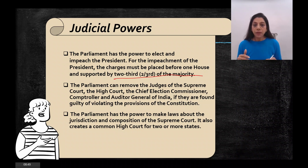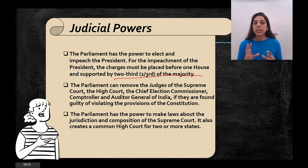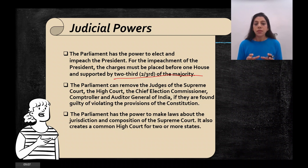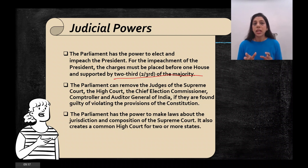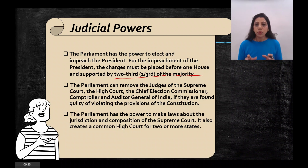Another judicial power of Parliament is to make laws regarding the jurisdiction and composition of the Supreme Court — how many judges there will be, what the jurisdiction will be. Parliament also creates common High Courts for two or more states. For example, certain northeastern states share a common High Court — creating such courts is also a judicial power of Parliament.